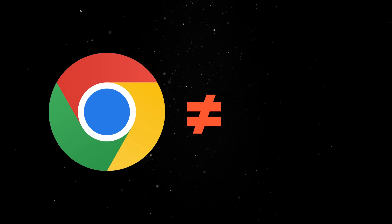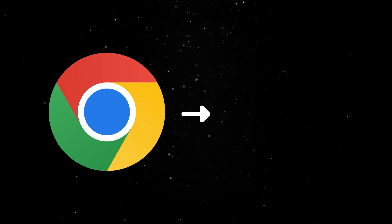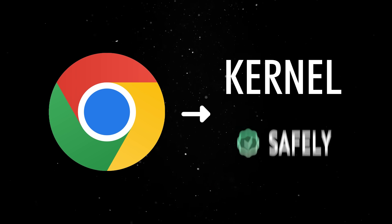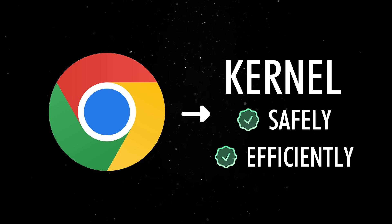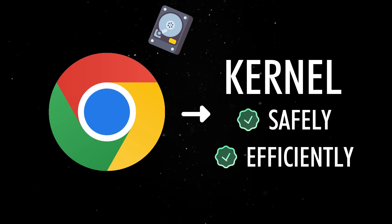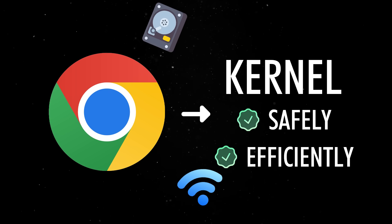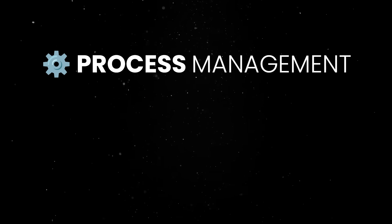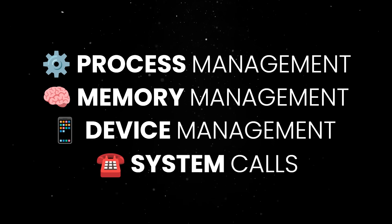For instance, a browser doesn't talk directly with the CPU or the GPU. Instead, it sends system calls to the kernel, which then decides how to execute them safely and efficiently. The same applies for any kind of operation, ranging from moving files on the disk to Wi-Fi management. The kernel is mainly in charge of process management, memory management, device management, and system calls.